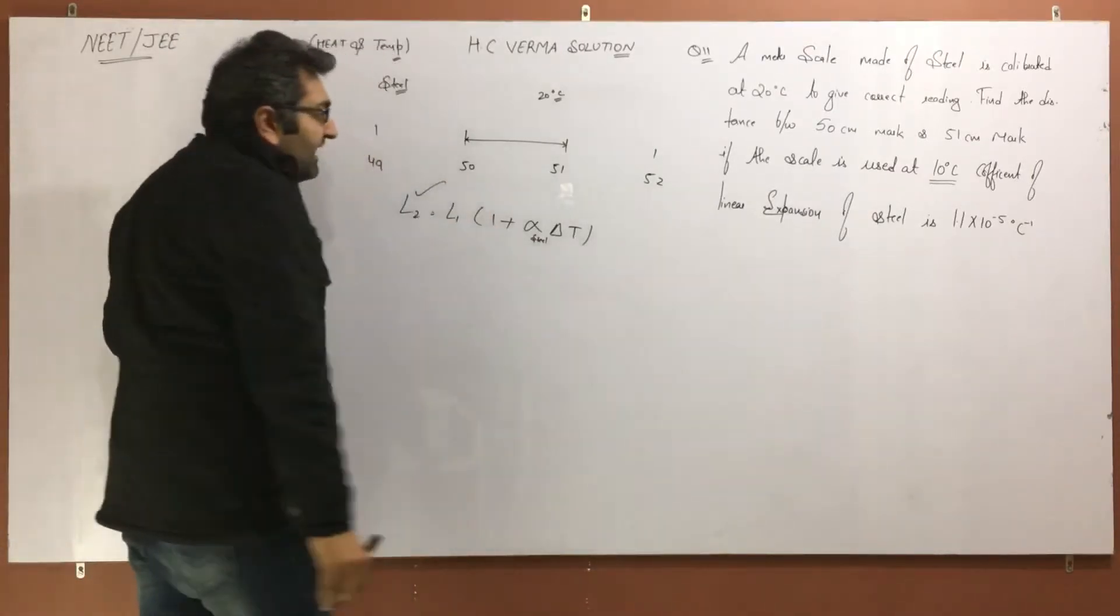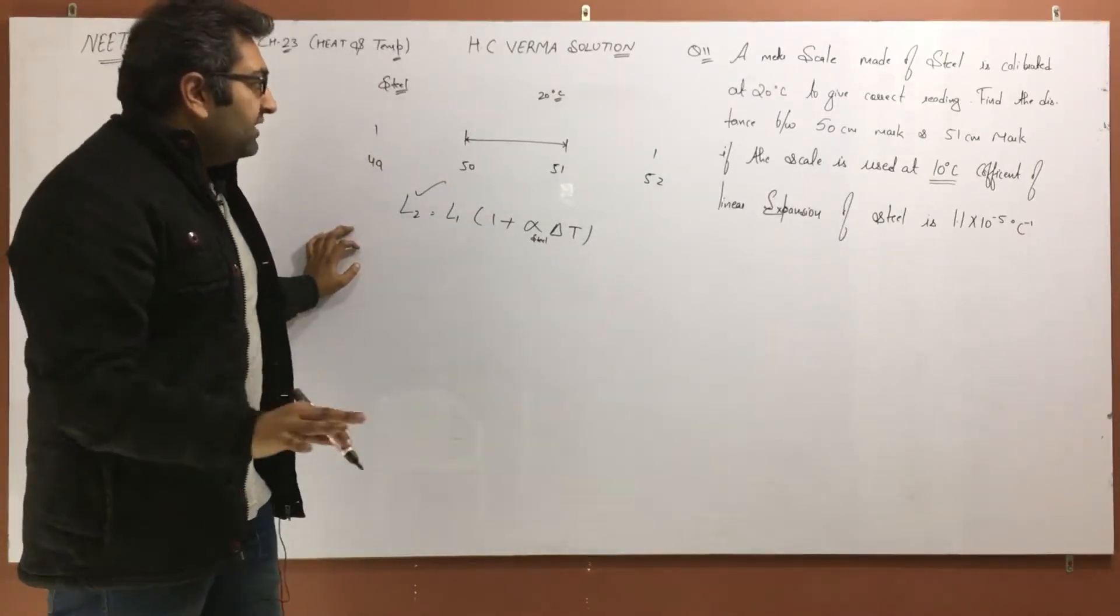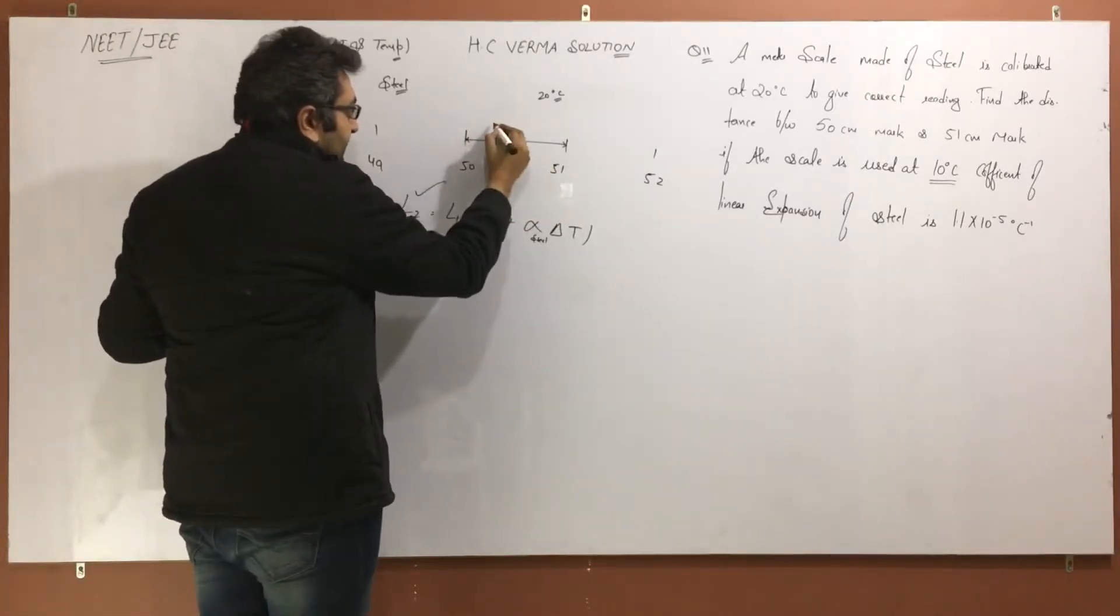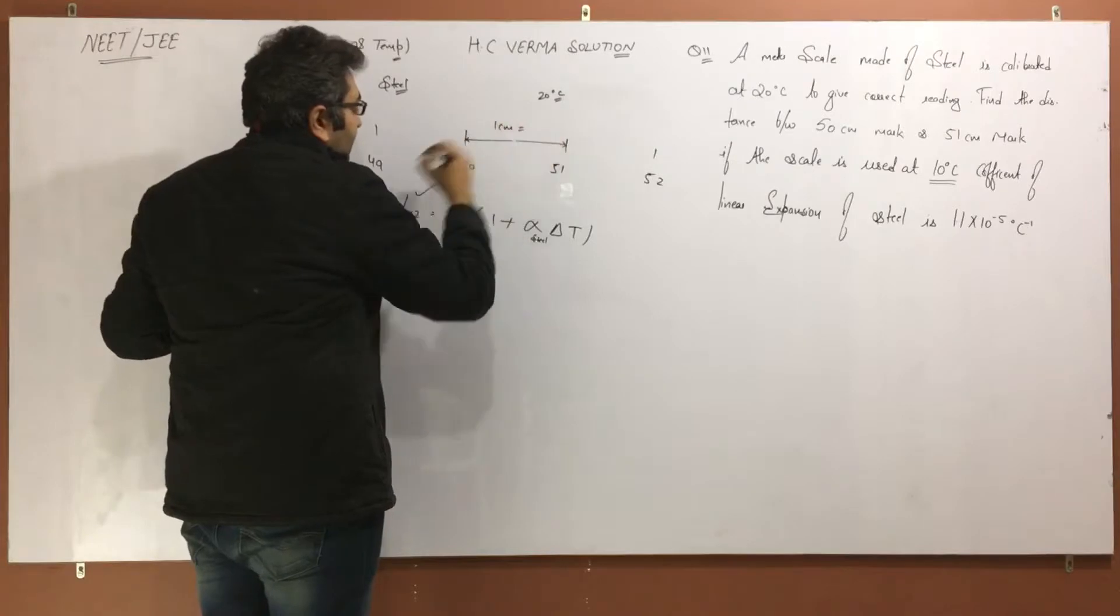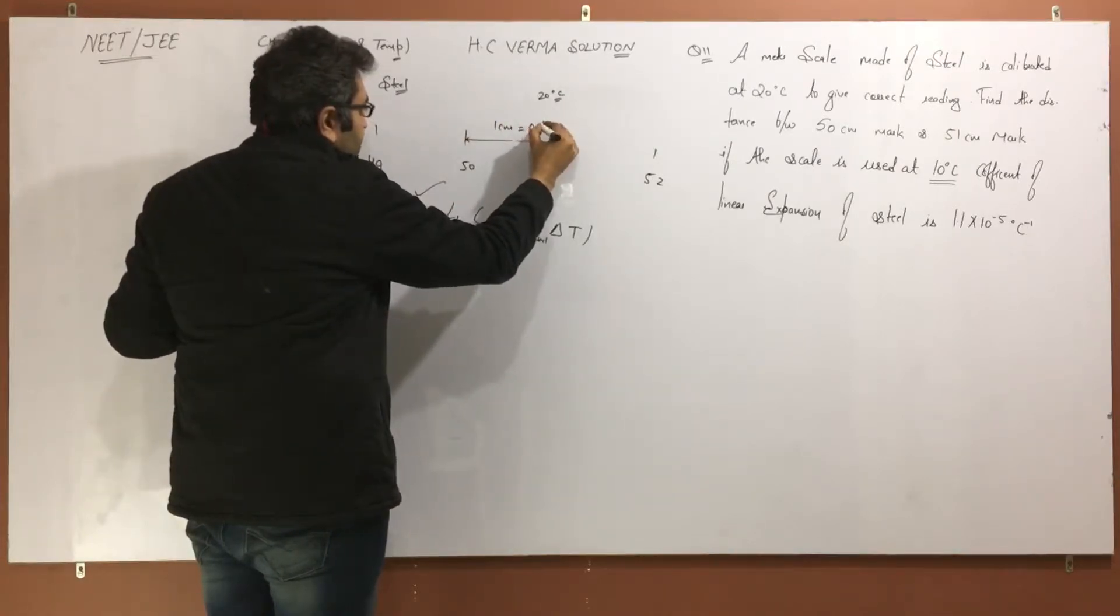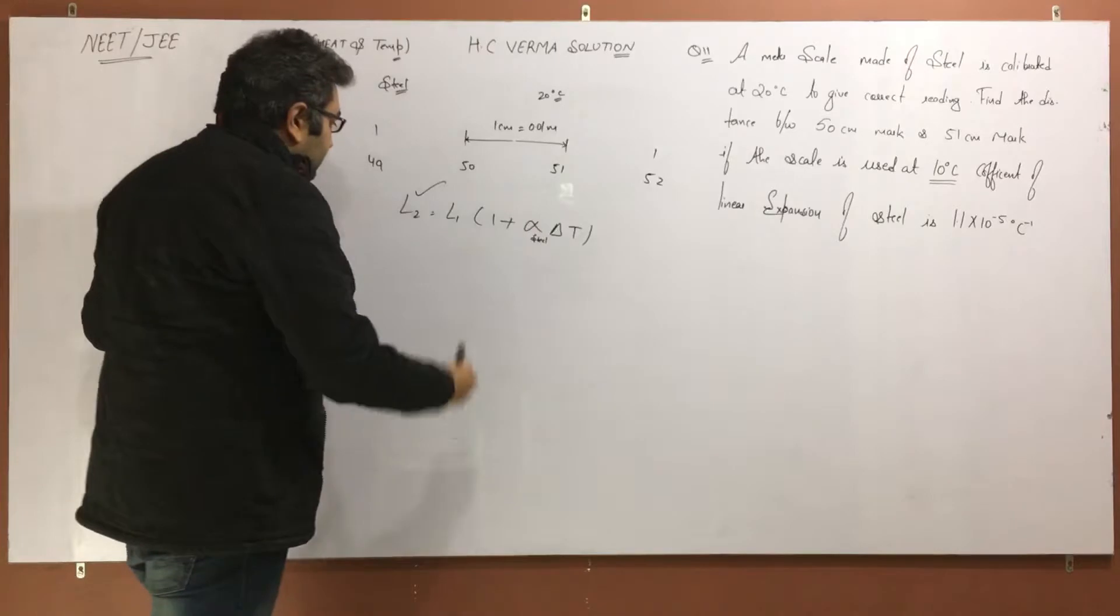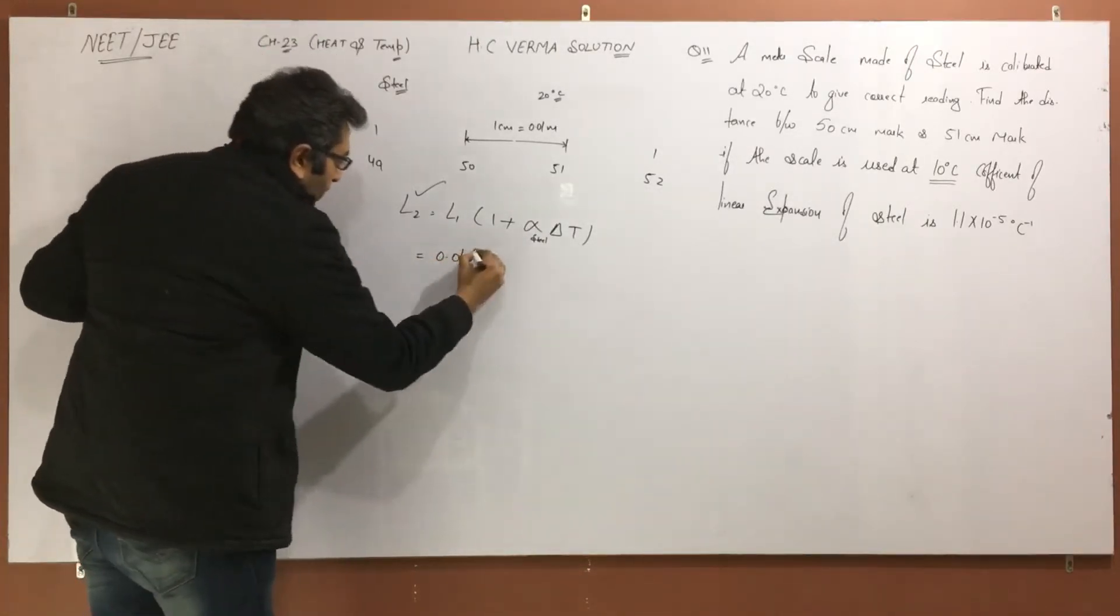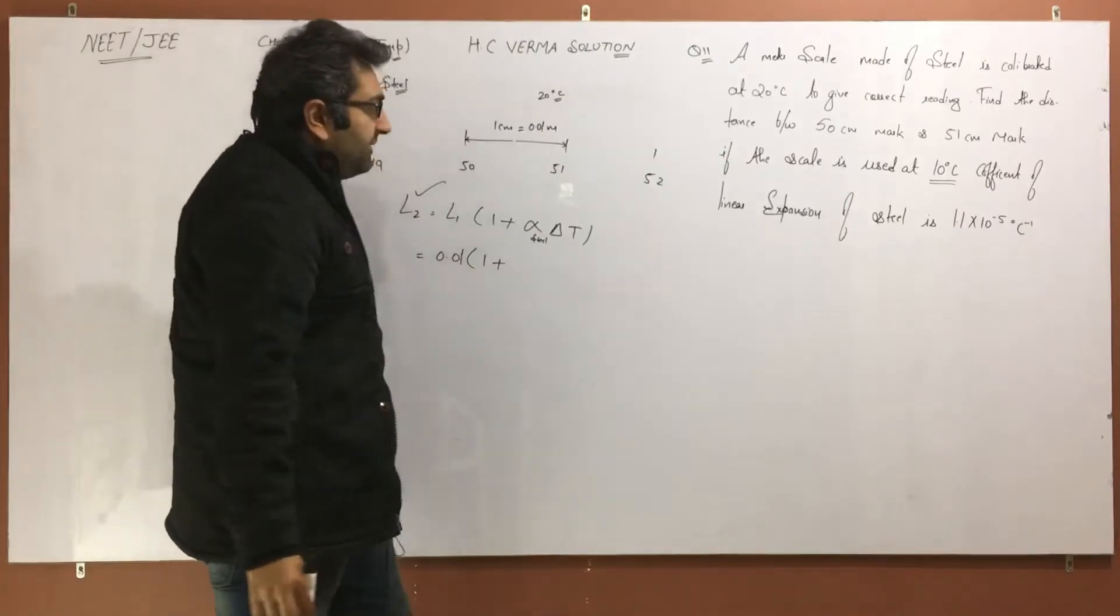L2 we will find out. L1 is value given. How do you know? 50 and 51. How much gap is? 1 centimeter. 1 centimeter or 0.01 meter. L1 is value 0.01 meter. 1 plus alpha.